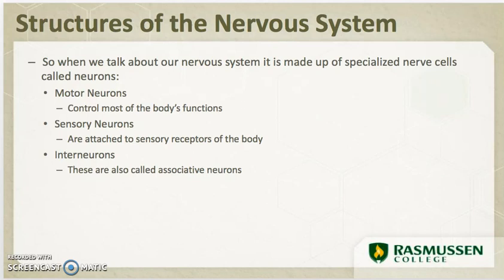The final type is called an interneuron, also known as an associative neuron. They are located completely within the central nervous system and act as a liaison or go-between for the sensory neurons and the motor neurons — they're essentially the middleman.